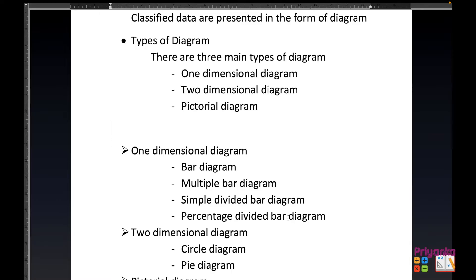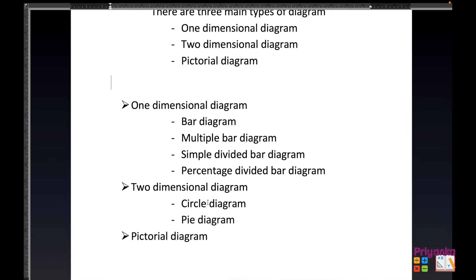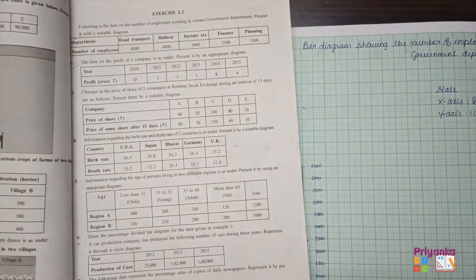Moving to the next, two dimension diagrams: that is the circle diagram and pie diagram. Here you need a protractor and a compass. You will understand more with the explanation. Next is the pictorial diagram, the most easiest diagram where you just have to draw what the question has asked. This will become clear with the continuation of this video and the solution of Exercise 2.3, Standard 11 Statistics Chapter 2.